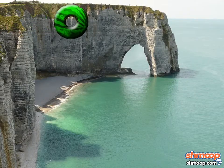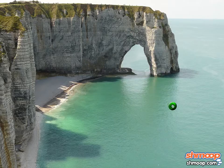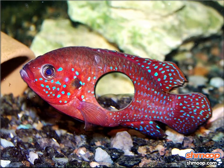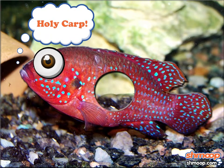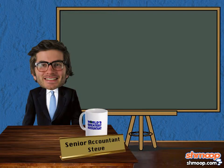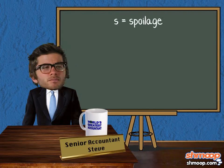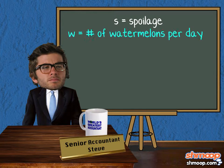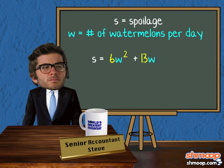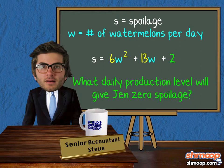There's just one problem. Tossing the spoiled watermelons into the ocean has had some undesirable effects. The guy in accounting says that the amount of spoilage for producing W number of watermelons per day can be approximated by the formula S equals 6W squared plus 13W plus 2. What daily production level will give Jen zero spoilage?